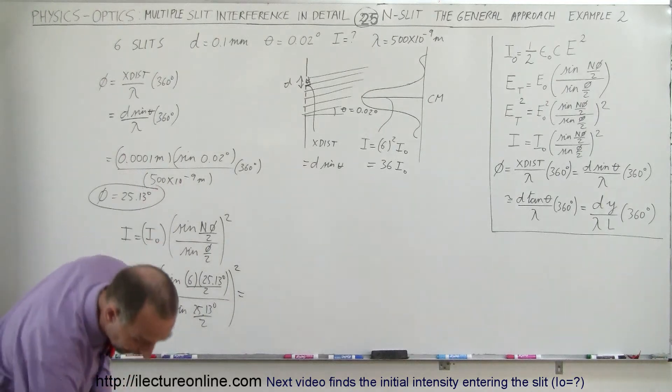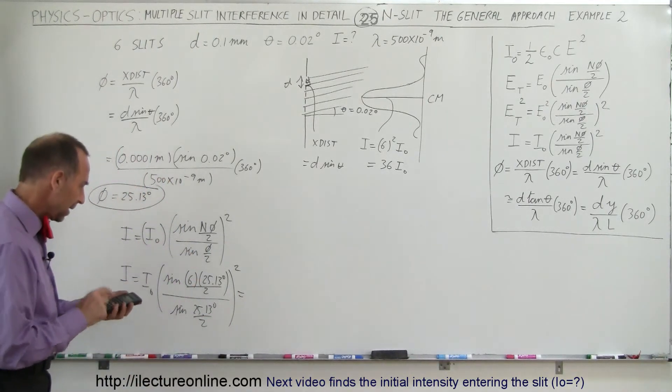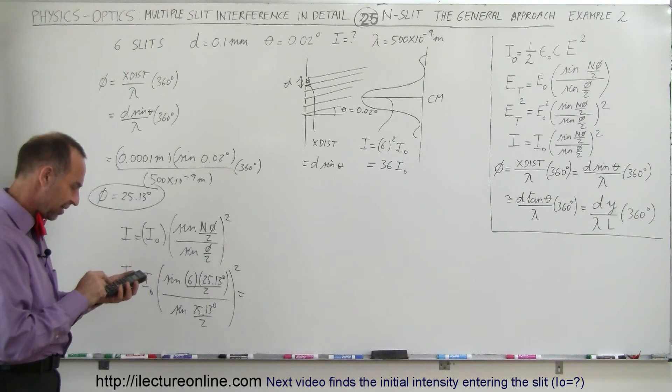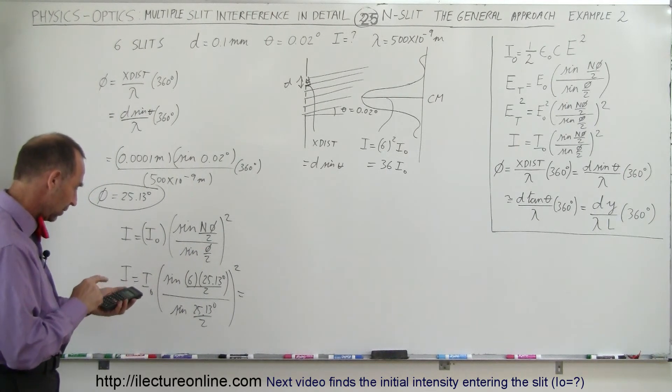Alright, let's see what we get when we do that. Okay, we're going to multiply that times 6, divided by 2, take the sine of that, and we divide that by the quantity...